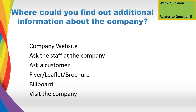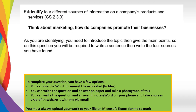Question five asks you to identify four sources of information on a company's products and services. Think about marketing — how do they promote their businesses? I've given examples on the previous slide. When identifying, introduce the topic then give the main points. For example: 'Four different sources of information on a company's products and services are...' and then list the ones you've found. You can also do this as a case study, focusing on a particular business you're interested in working for.